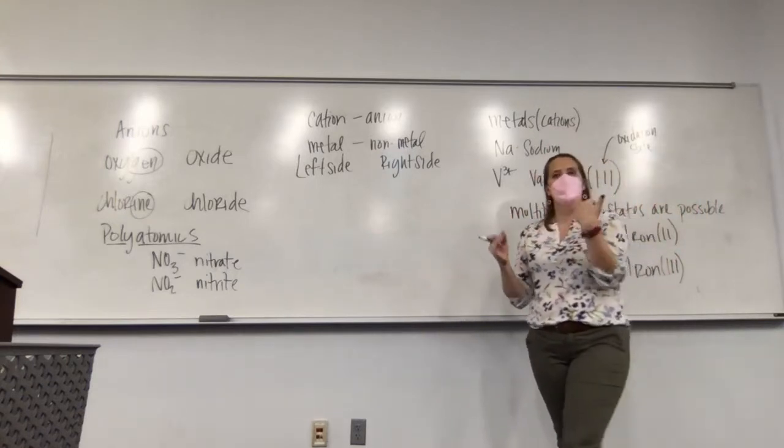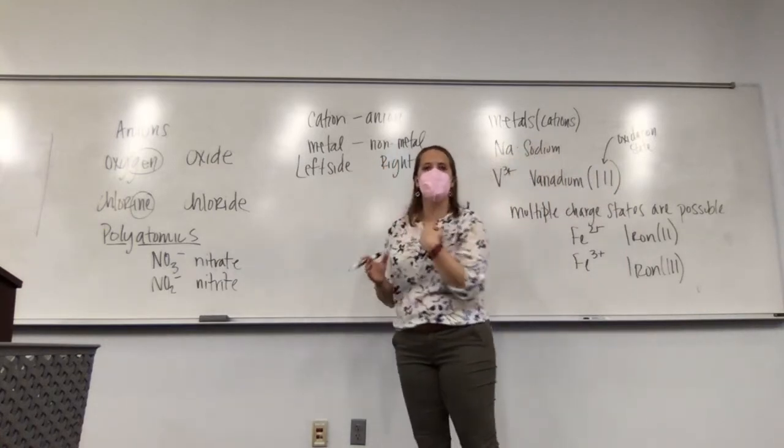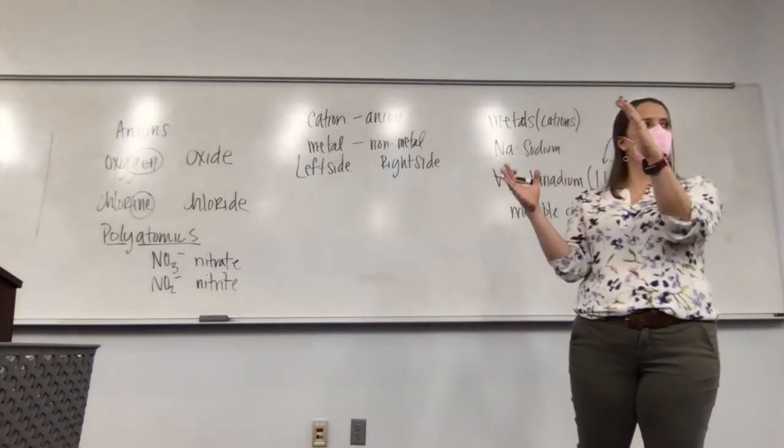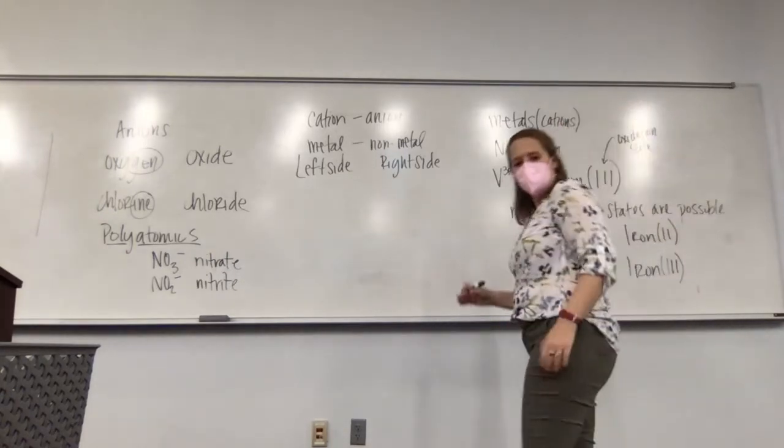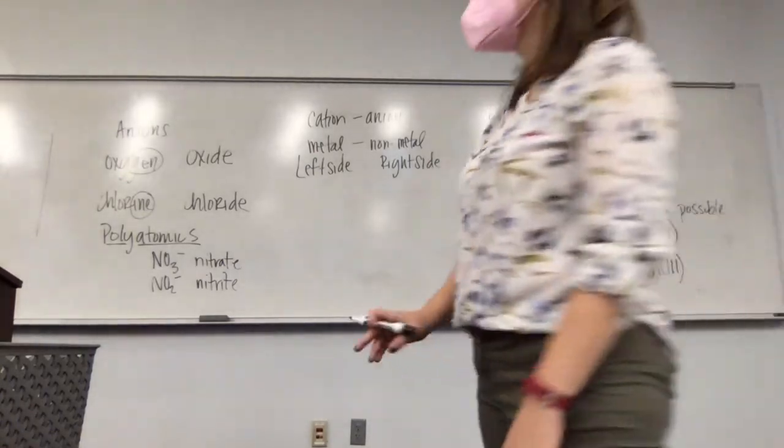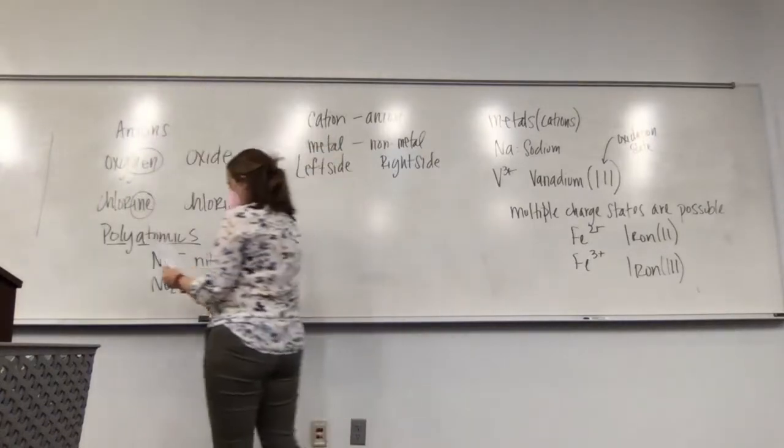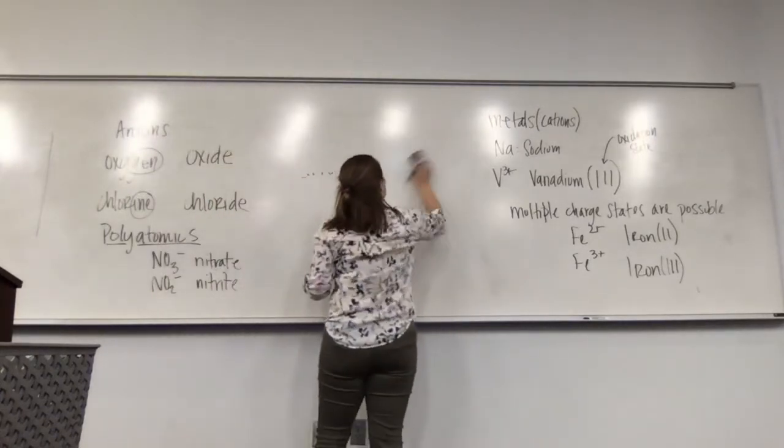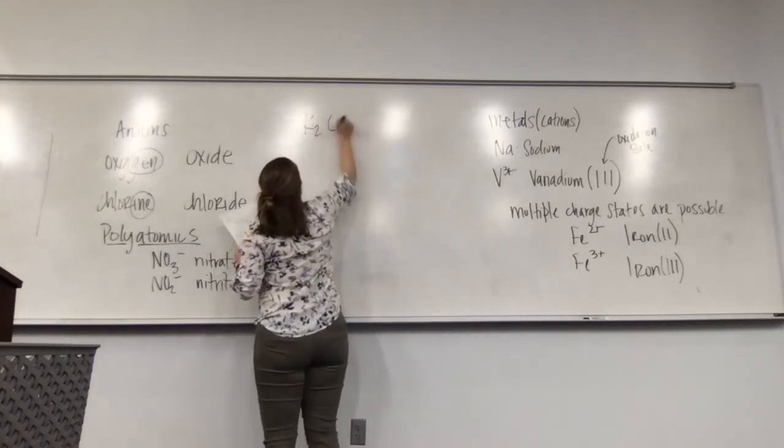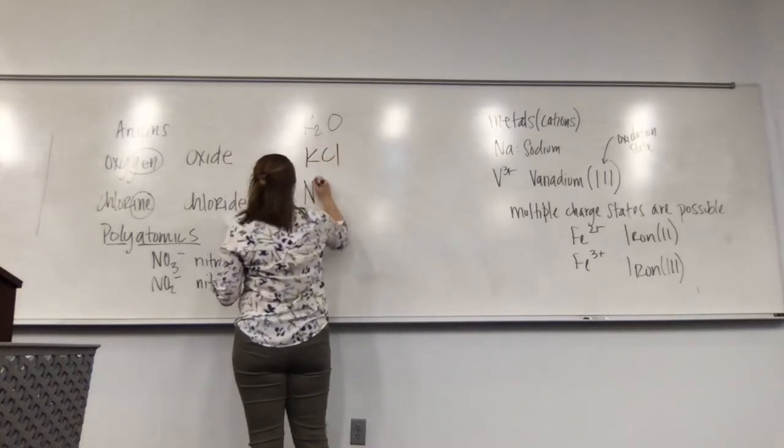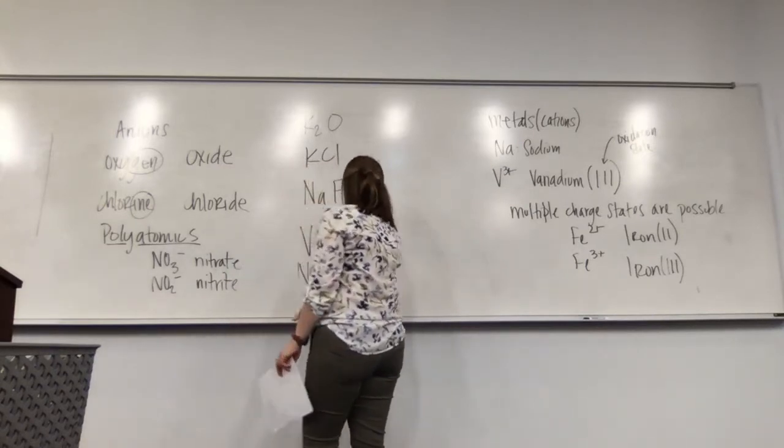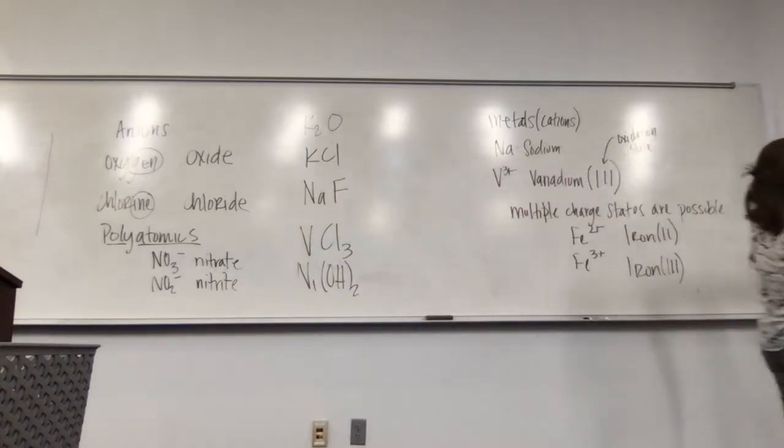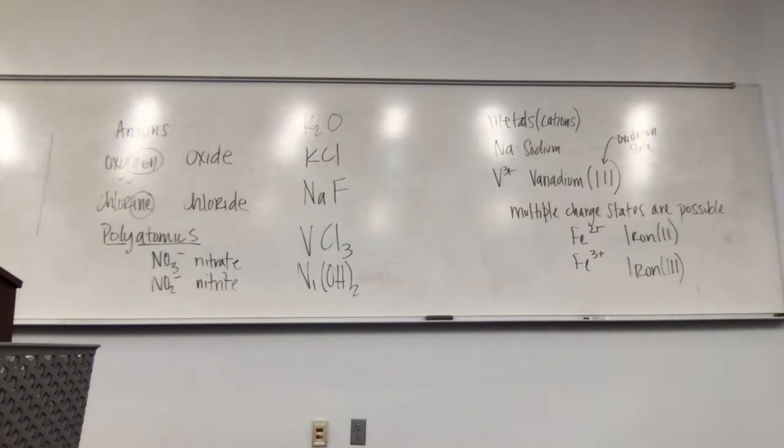What you are responsible for when we get to mini exam two, so in two weeks, if I say given the chemical formula, what is the chemical name, you should be able to come up with that. Or if I give you the name and we go to the formula. So today, we have some examples. We have K2O, KCl, NiF, VCl3, Ni(OH)2. What I want you to do is try to come up, using your periodic table, the chemical name for these five compounds.